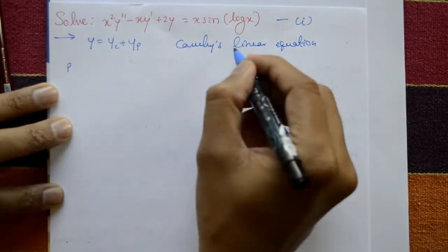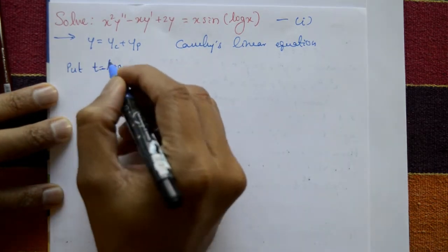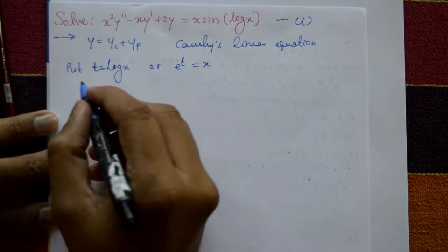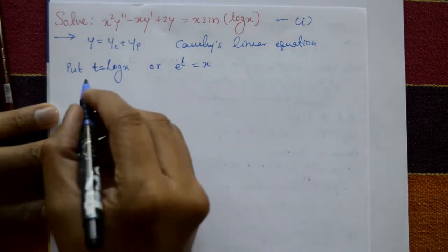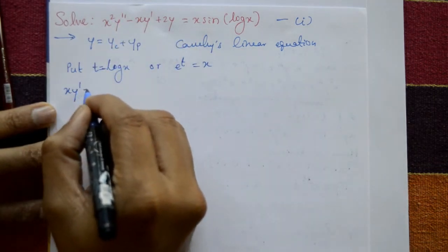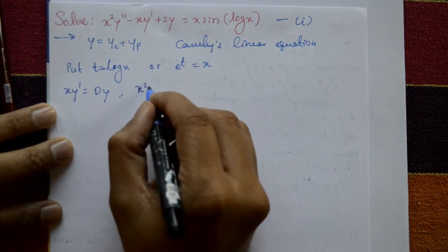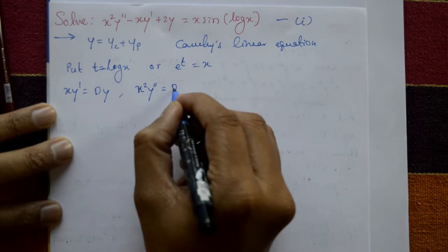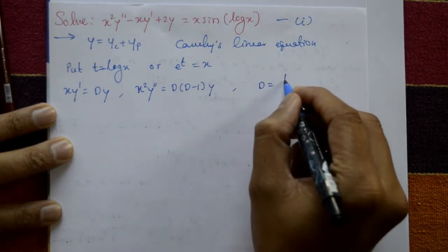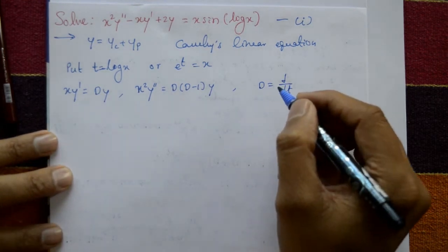Since this is a Cauchy's linear equation, put t = log x, or equivalently e^t = x. We assume the standard results: xy' = Dy, and x²y'' = D(D−1)y, where D stands for d/dt, the differential operator.